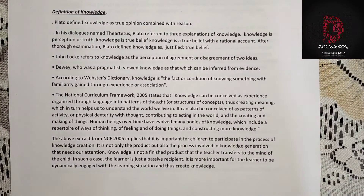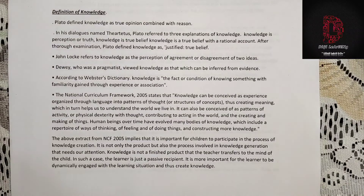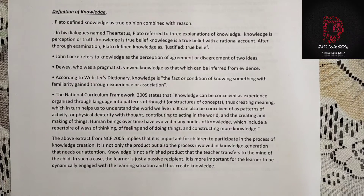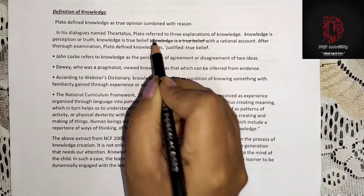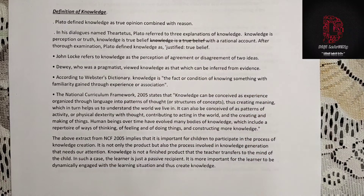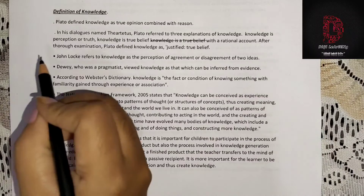Plato defined knowledge as true opinion combined with reason. In his dialogues, Plato referred to three explanations of knowledge: knowledge is a perception of truth, knowledge is true belief, and knowledge is a true belief with a rational account. After thorough examination, Plato defined knowledge as justified true belief.